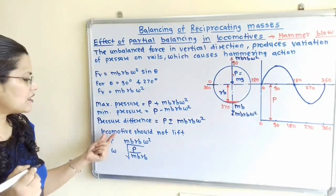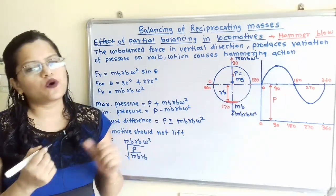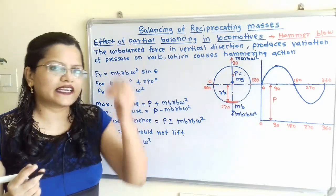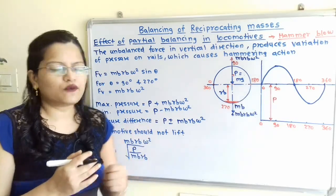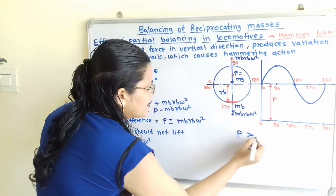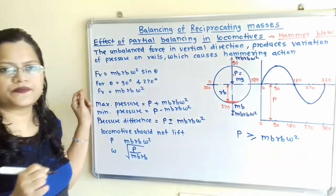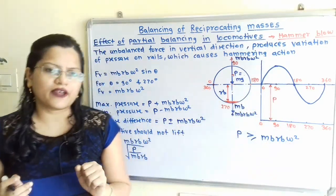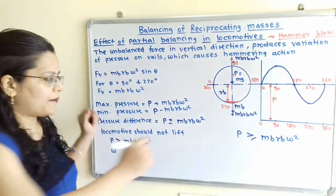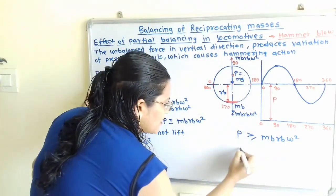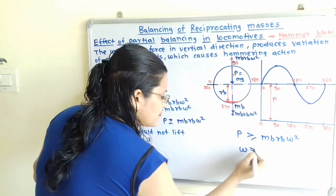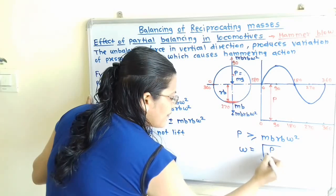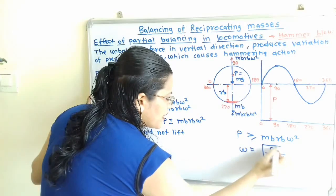There is also the condition of locomotive lift. The locomotive wheel gets lifted when MbRb·ω² is greater than P, and we must avoid this. To prevent lifting, P must always be greater than or equal to MbRb·ω². The term we can manage is angular velocity ω, giving the limiting condition: ω = √(P / MbRb). We must keep ω within this value.